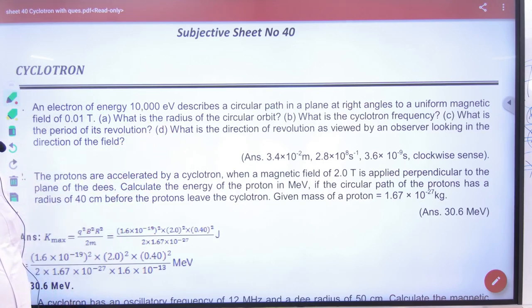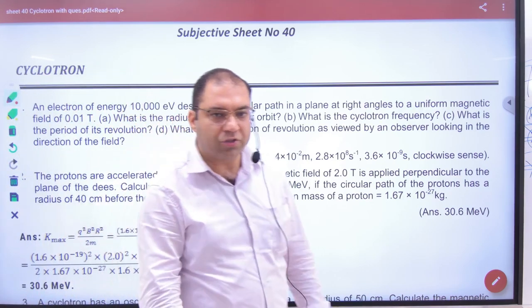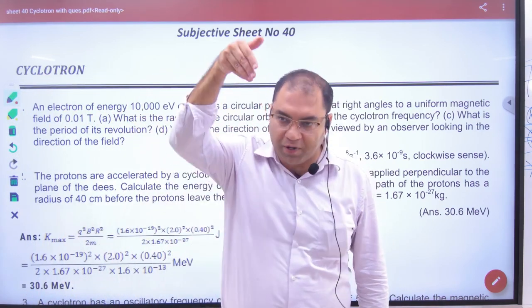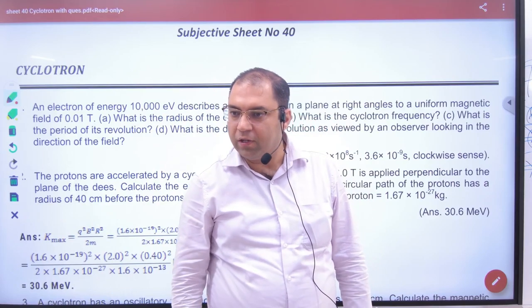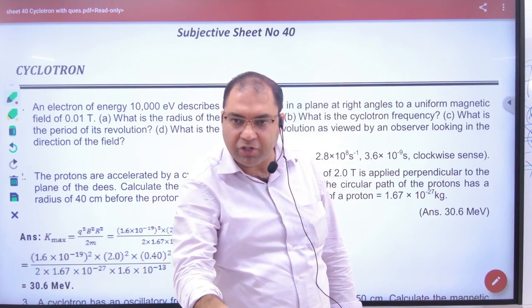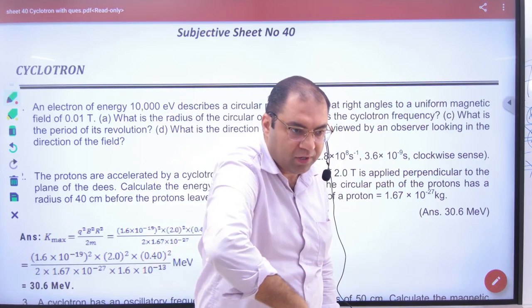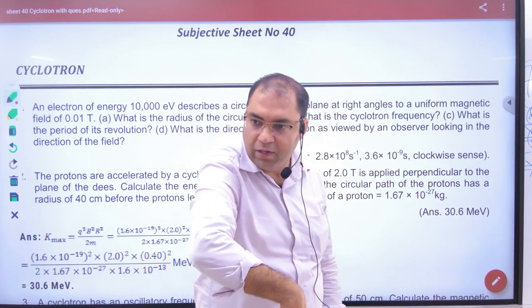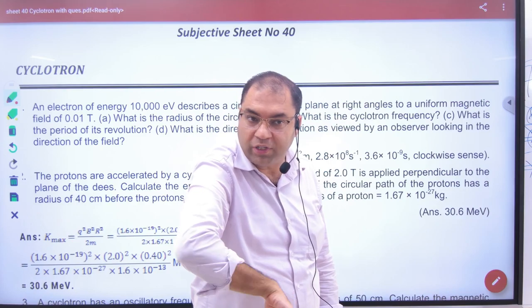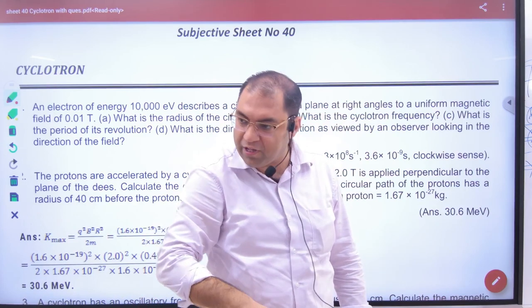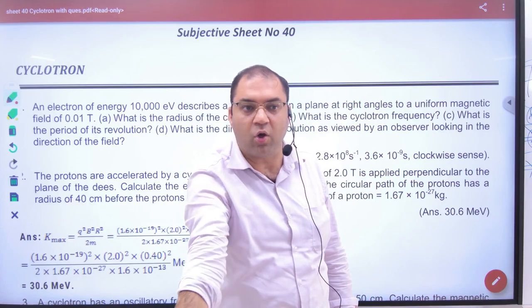What is the direction of revolution as viewed by an observer looking in the direction of the field? Where is the direction of the field? Where is the cyclotron? Up to down, north to south. If a proton is down, positive charge, it would be like this. But what is the electron? How will it be? It will be like this. And if I look like this, how will it be? Clockwise.